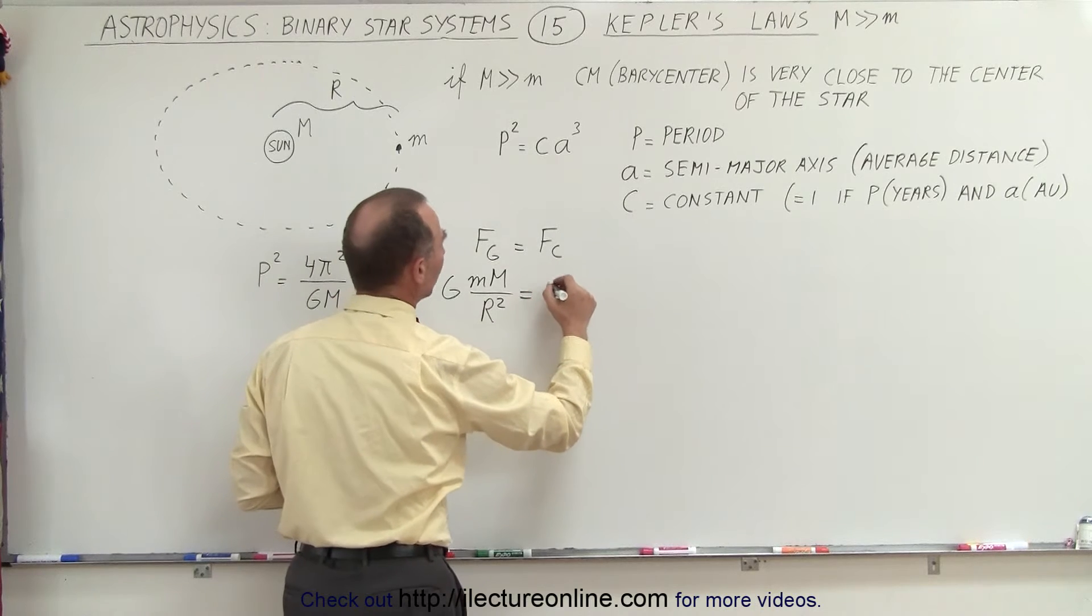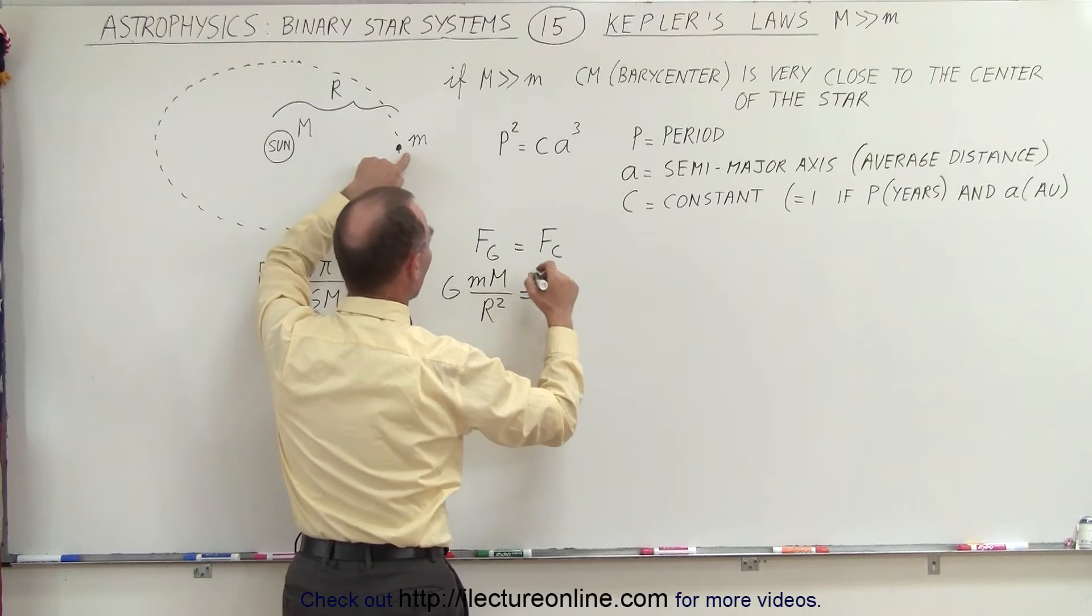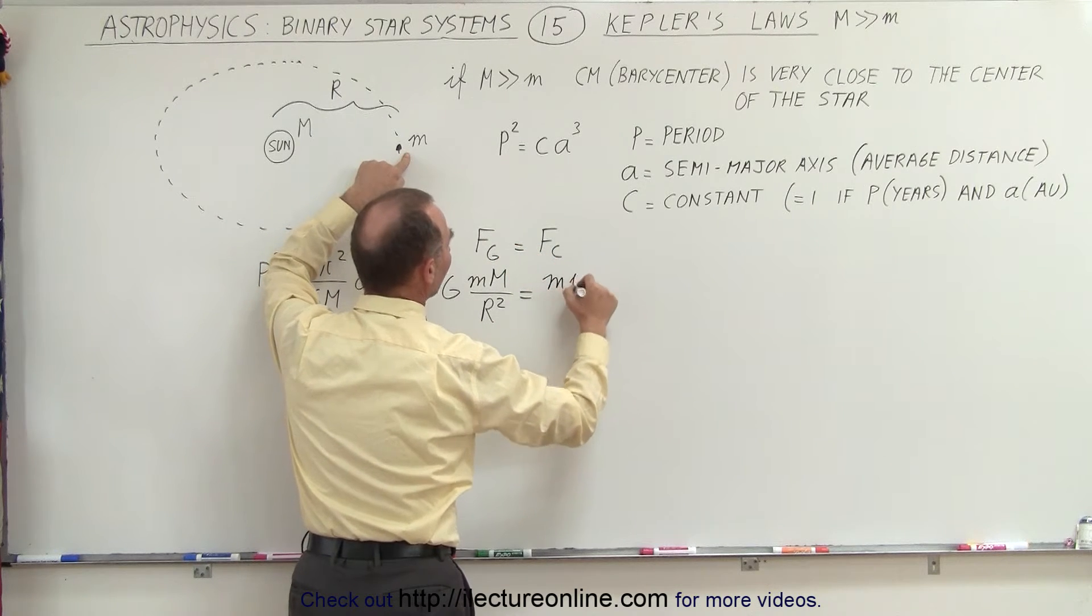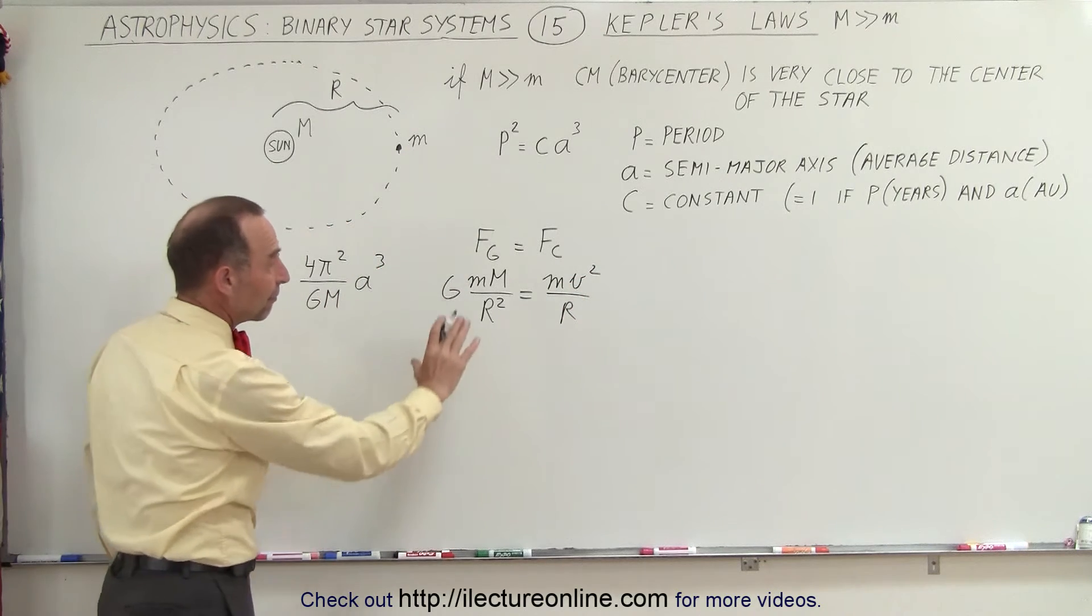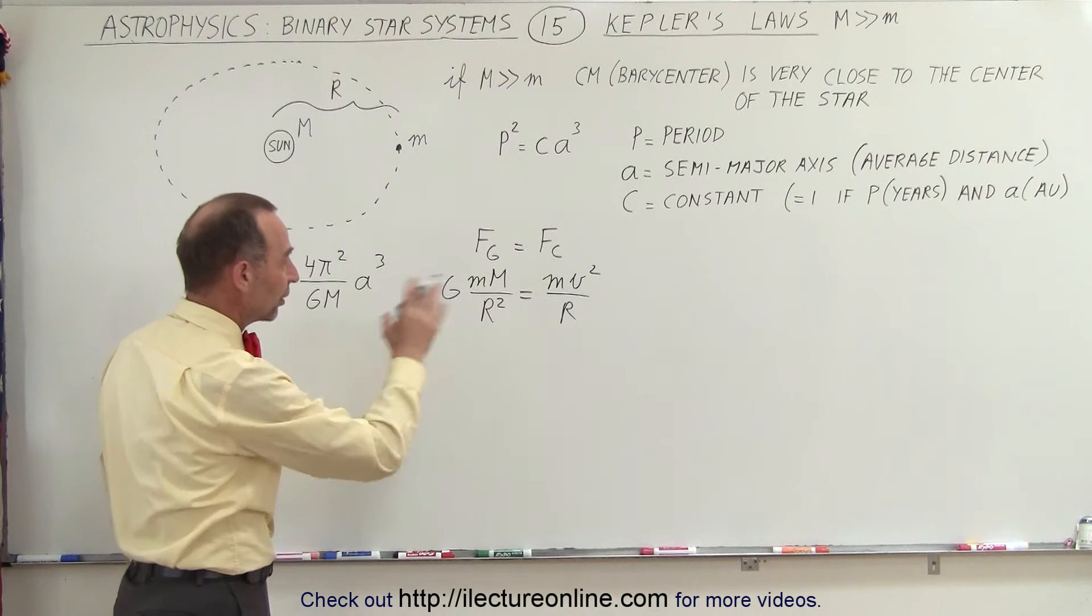And the centripetal force will be equal to, on the small mass, mv²/r. So what we're going to do first is calculate v from this equation in terms of the other variables.